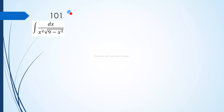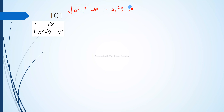Looking at the radical, we have it in the form a squared minus u squared. That is the first thing to identify — the form of the radical. This corresponds to the Pythagorean identity 1 minus sine squared theta. So we let u equal a sine theta. Let's determine our u and a: our u is x.